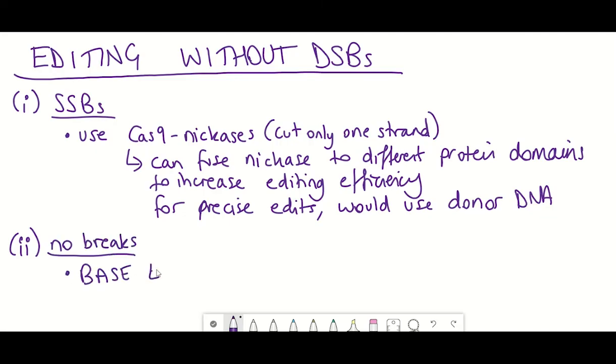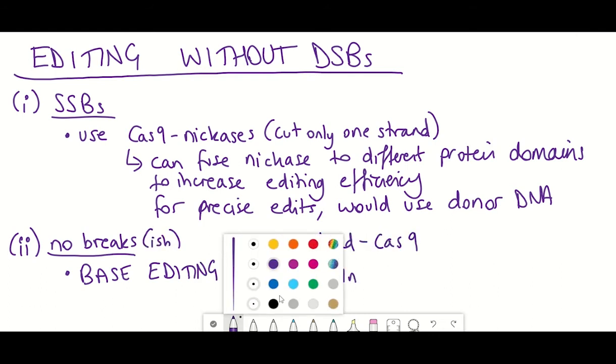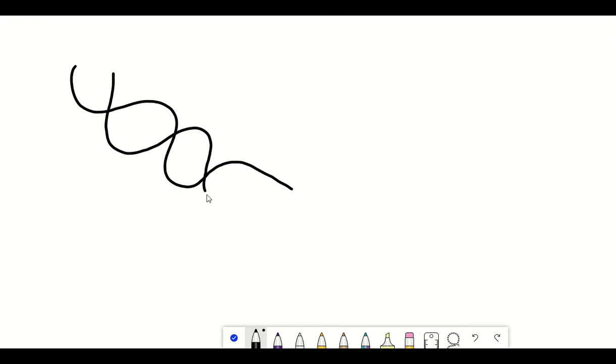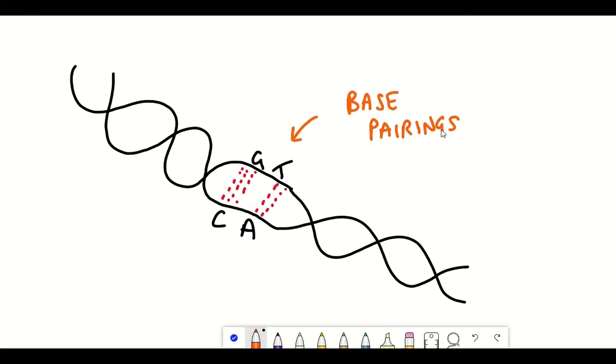Well, the solution to this problem was base editing, which was devised by David Liu's lab, who unsurprisingly are also behind this recent paper. So base editing is a genome editing method that efficiently converts one base pair to a different base pair. So DNA contains two base pairs. You have cytosine paired with guanine, so C to G, and adenine paired with thymine, so A to T. So base editing would change a C to G base pair to an A to T base pair, or vice versa.